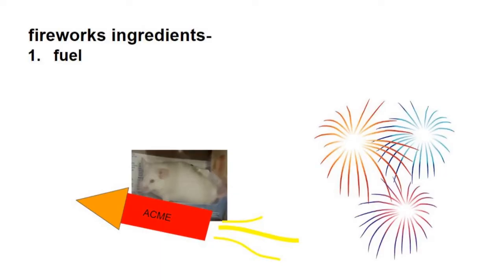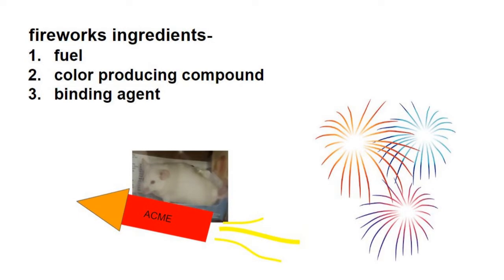There are three types of ingredients that make up fireworks. Fireworks require some sort of fuel, a color producing compound, and a binder which holds the components together and once ignited further acts as a fuel source.